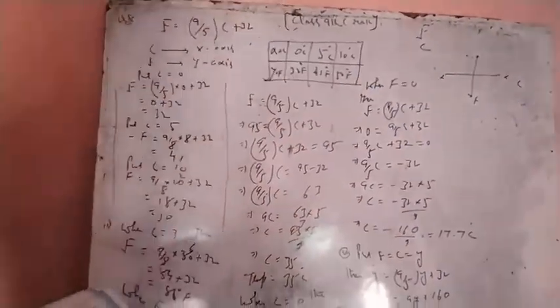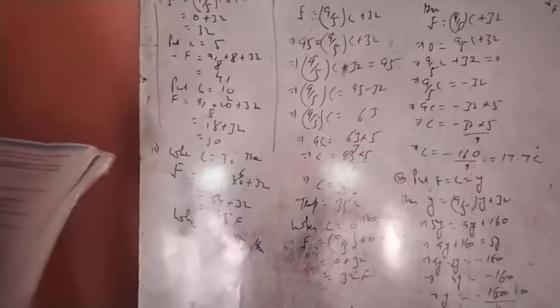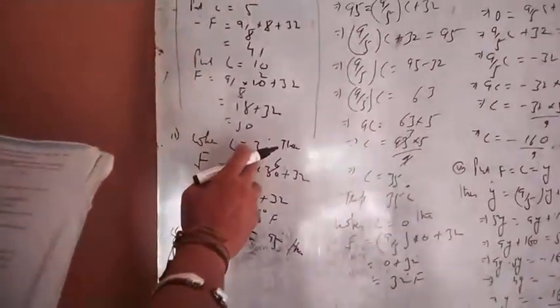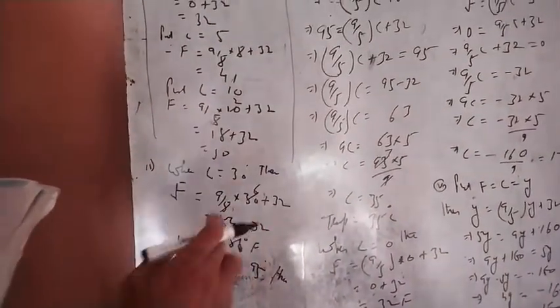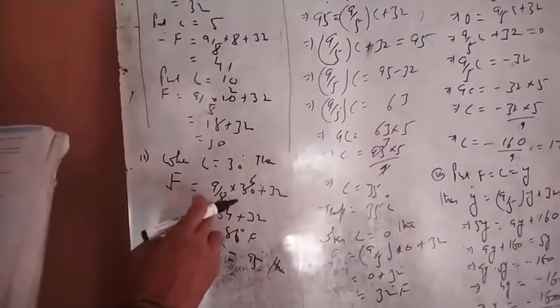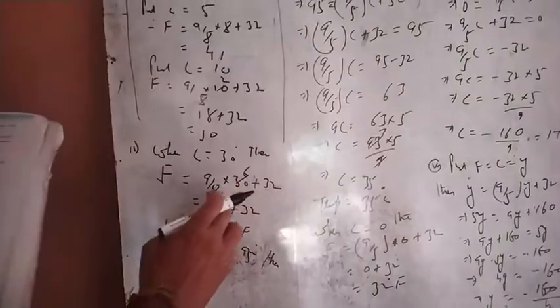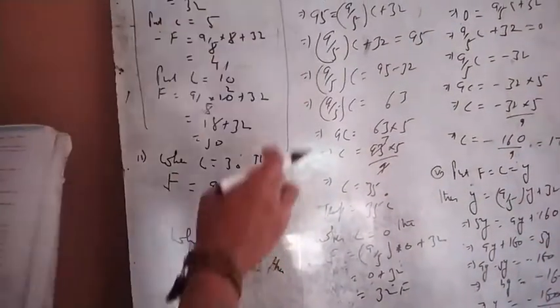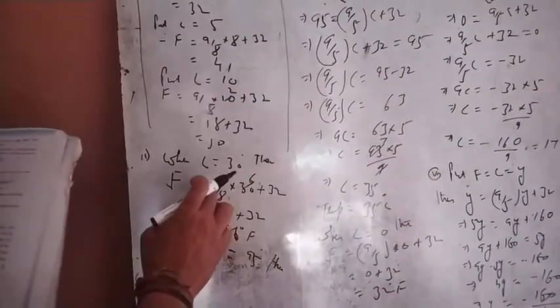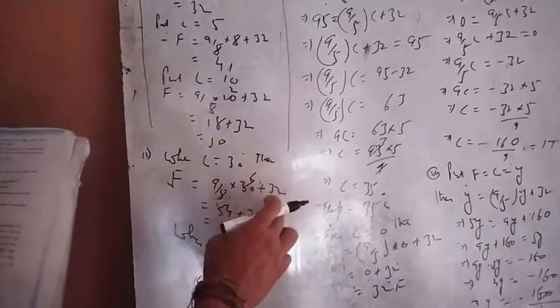Second, if the temperature is 30 degree Celsius, then you have to find the temperature in Fahrenheit. Then F is equal to 9/5 times 30 plus 32. 5 times 6 is 30, 9 times 6 is 54, plus 32 equals 86 degrees.